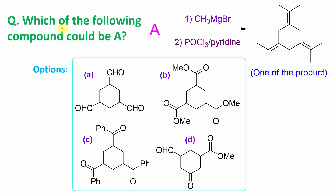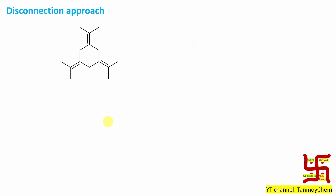Which of the following compounds could be the starting material among the four options? Generally, we give a starting material and ask what is the product. But here it is asked: what is the starting material? For that purpose, you need to come back step by step to get the initial product — that is actually called the disconnection approach.